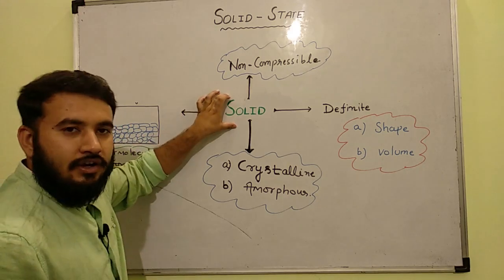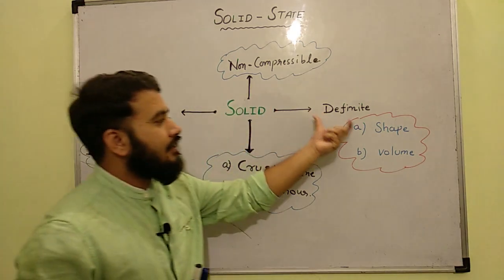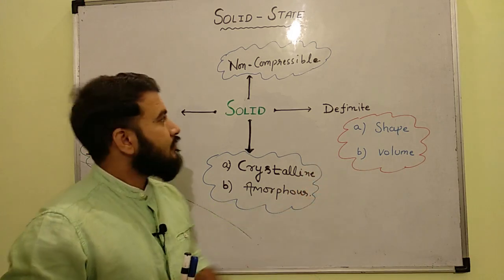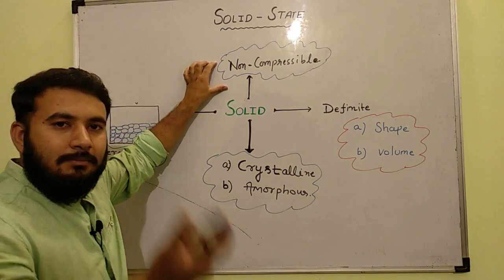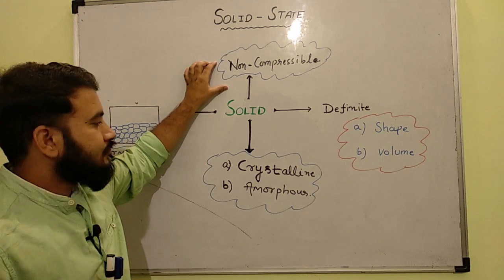One of the most interesting properties is its definite shape and volume. So its shape and volume is fixed. Besides, solids are mainly non-compressible in nature, they cannot be compressed, they are rigid in nature.